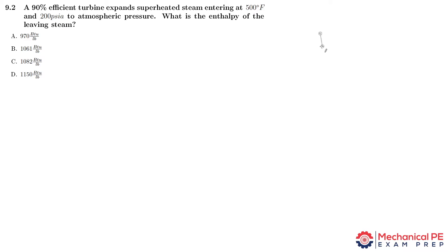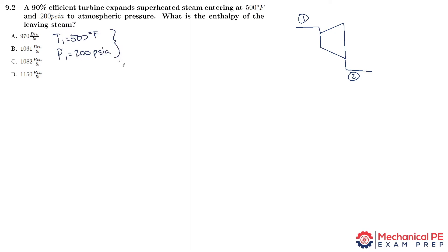We'll start with a quick drawing of our turbine. We've got state 1 entering and state 2 leaving. The given information for the entering condition is that the temperature is 500°F and the pressure is 200 psia. We look that up in the superheated steam table — it is superheated — and we find that the enthalpy at state 1 is 1269 BTU per pound and the entropy is 1.624 BTU per pound-Rankine.